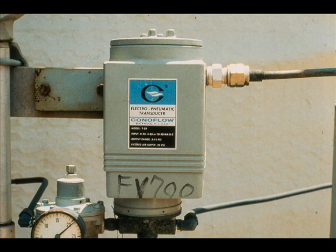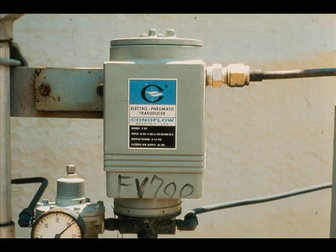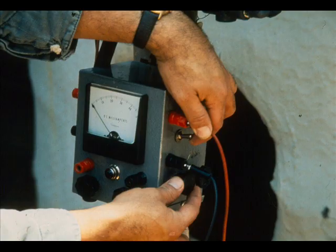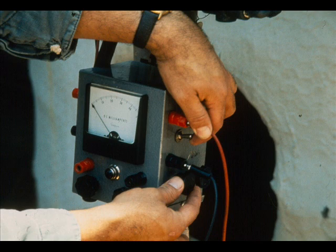We will demonstrate the use as a current source by testing a 10 to 50 milliamp transducer for a control valve. Turn on the power and set the fine and coarse knobs all the way counterclockwise. These adjustments are near the 45-volt terminals.